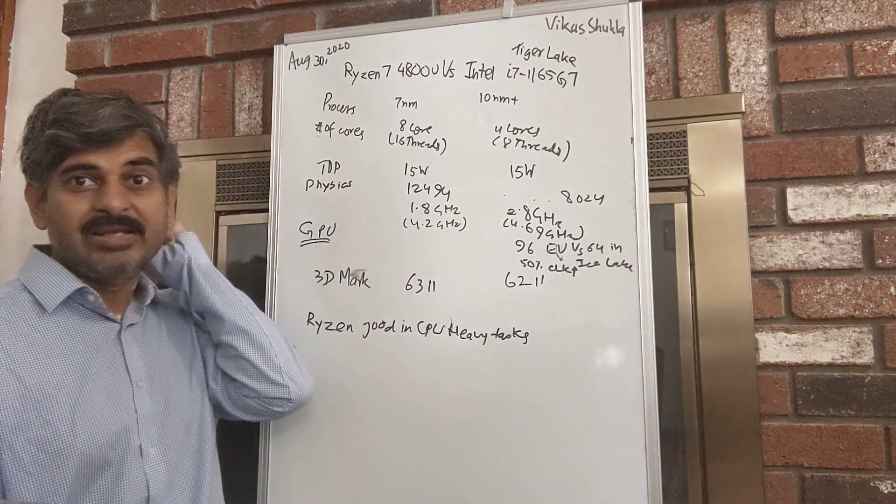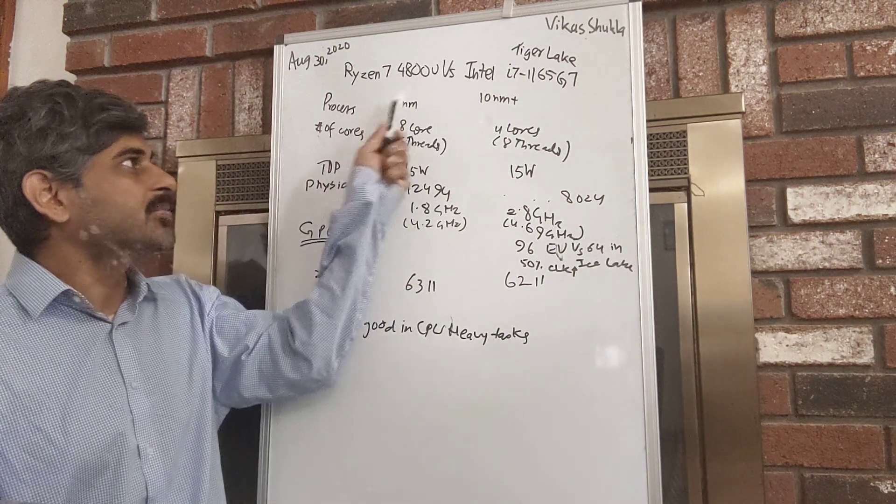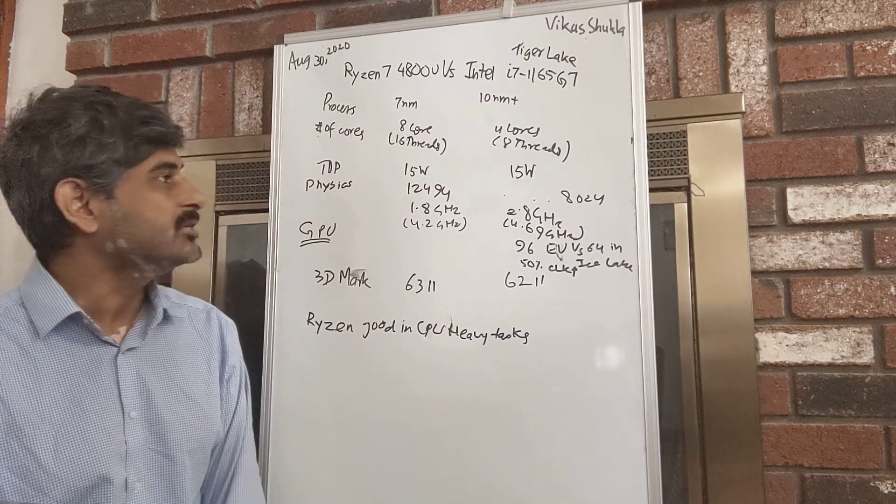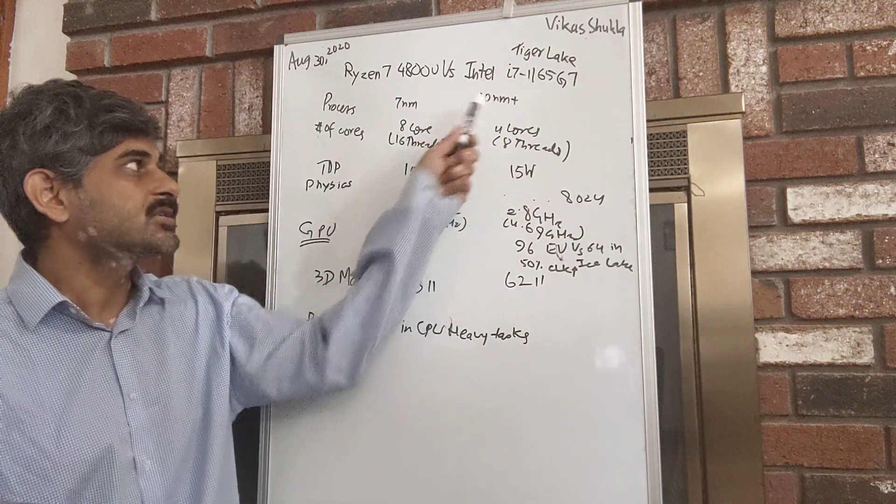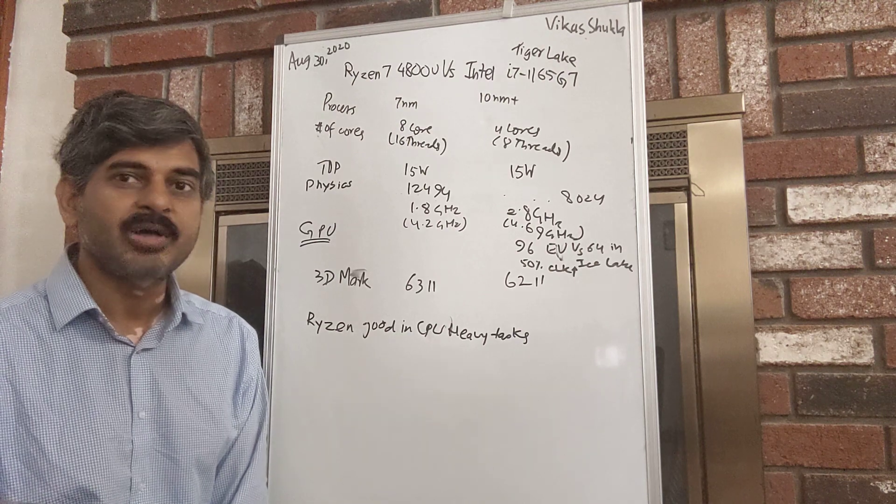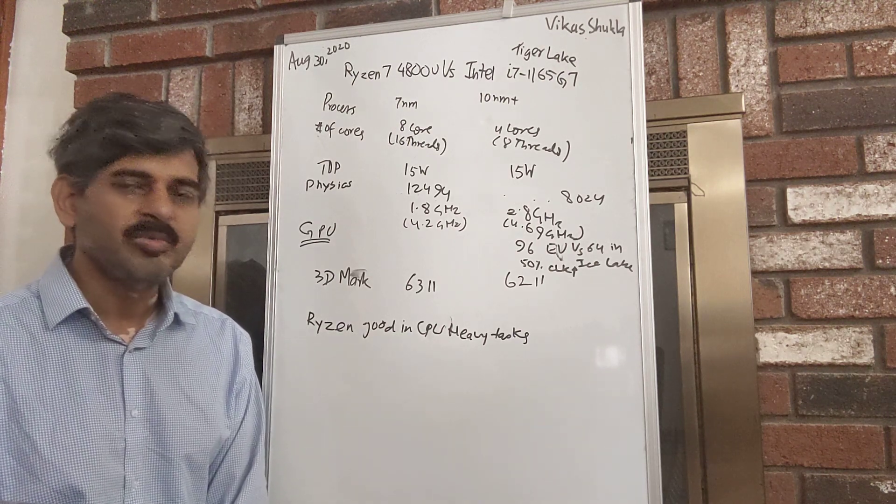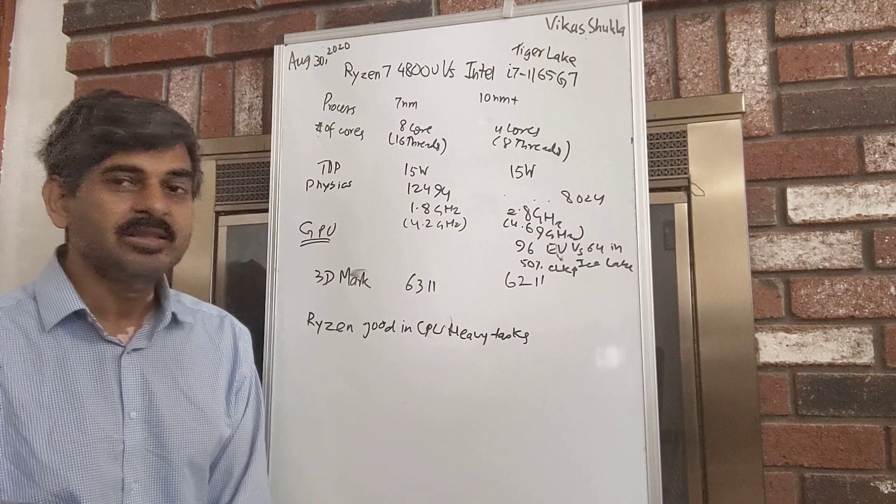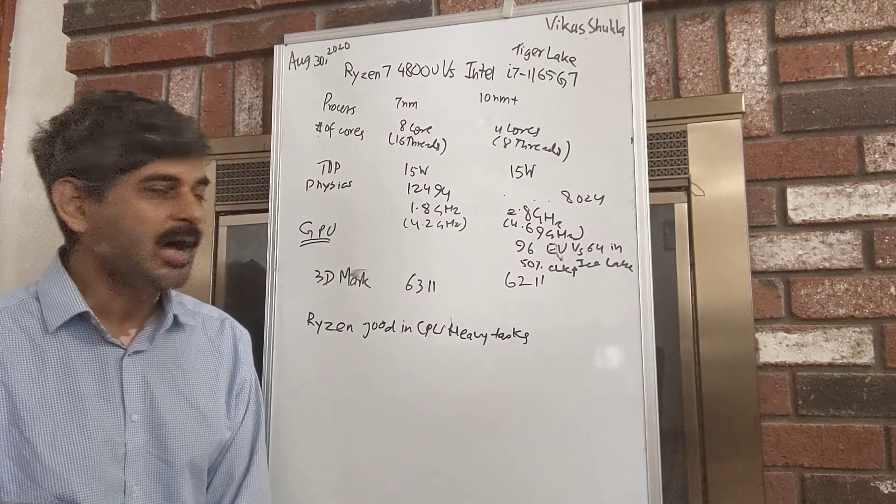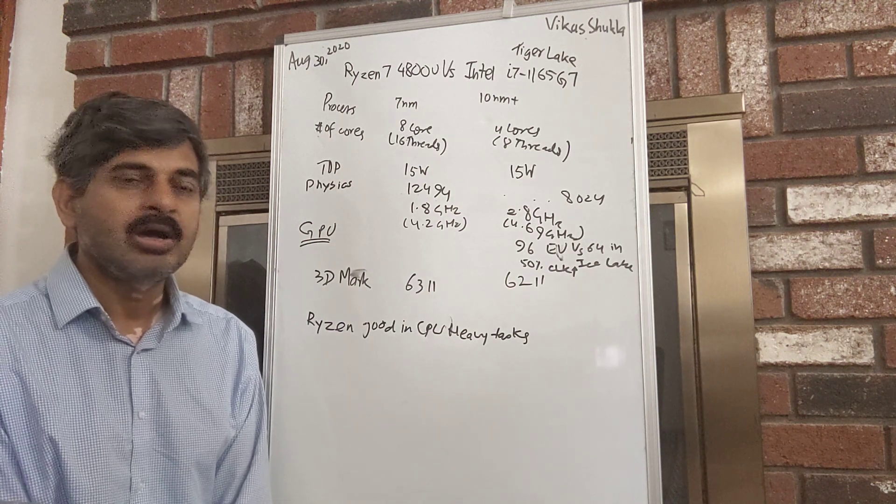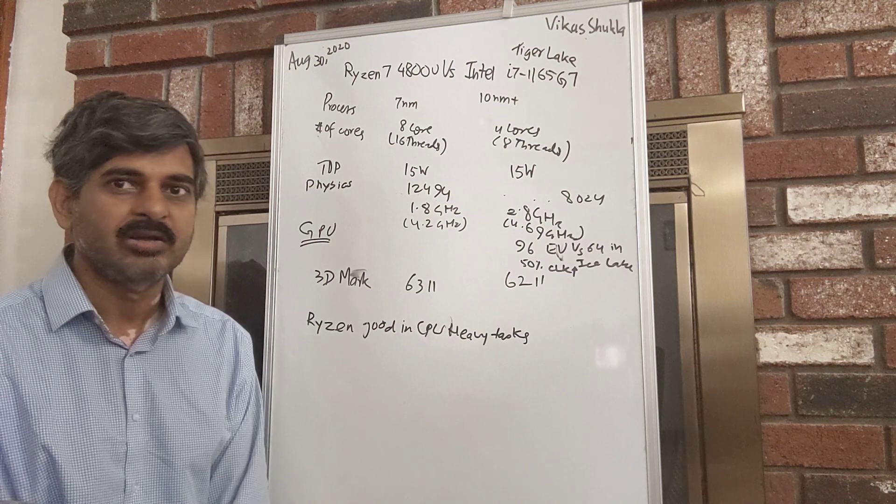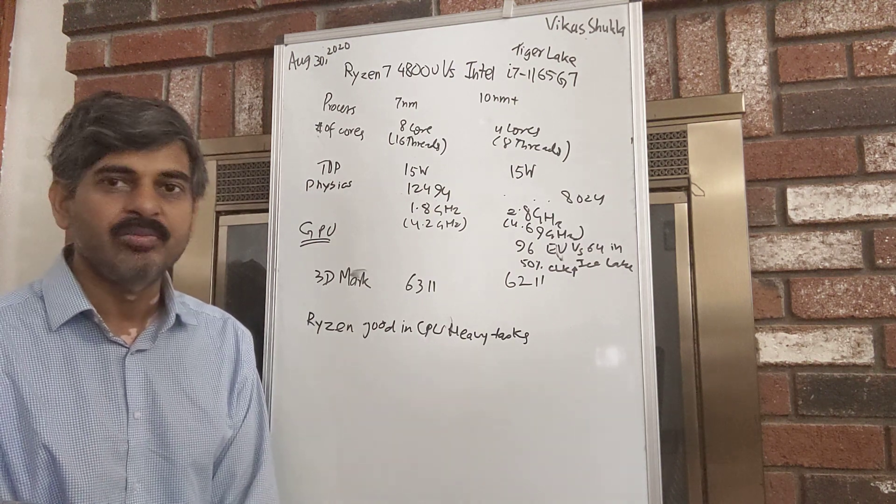Another key difference is that Intel is running behind in the process technology. AMD outsources this to TSMC, the Taiwanese manufacturer. Intel is still trying to improve its existing processor. It improved its 10 nanometer process to improve some of its gating, and that brings a little bit of incremental improvement over its previous Ice Lake, and that improvement is of the order of 10 to 15 percent, which is still not good enough though it does improve things a bit.